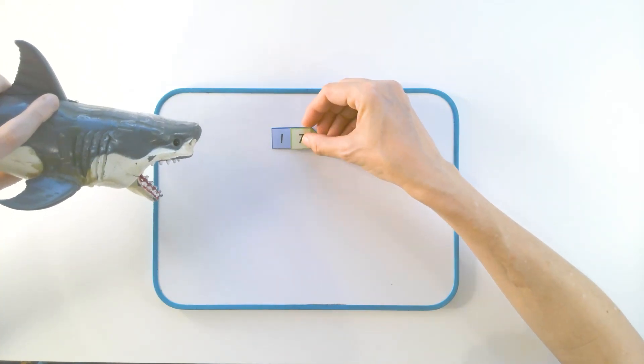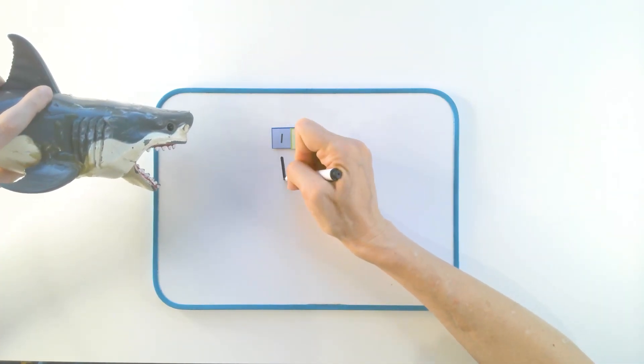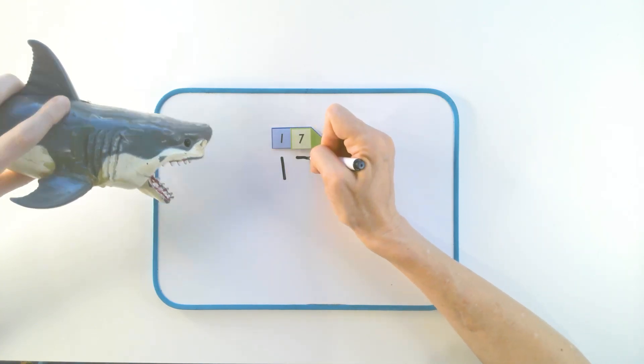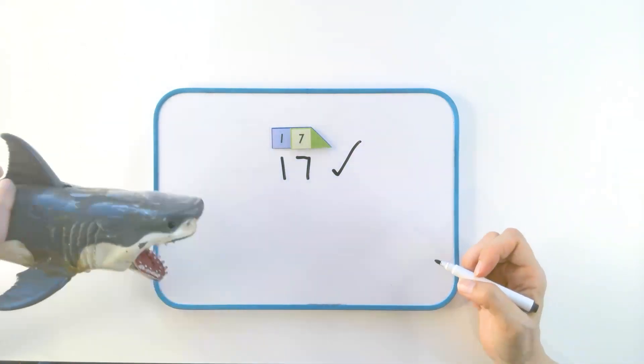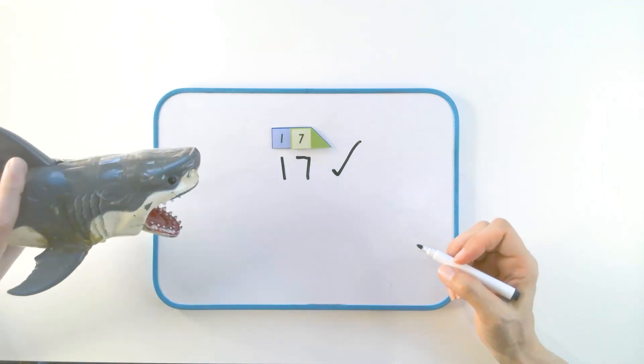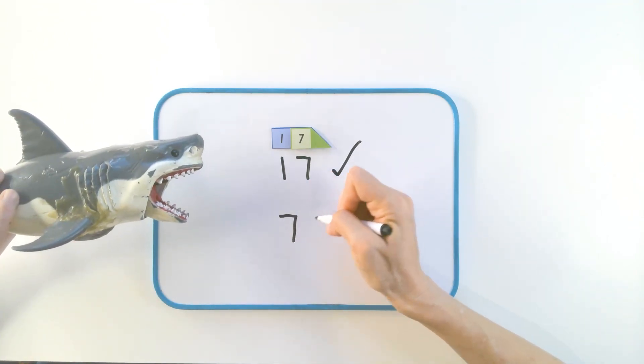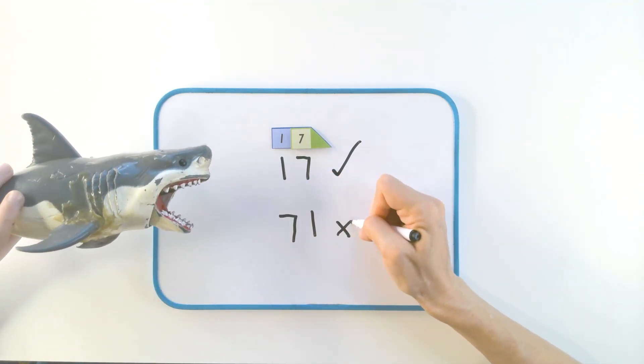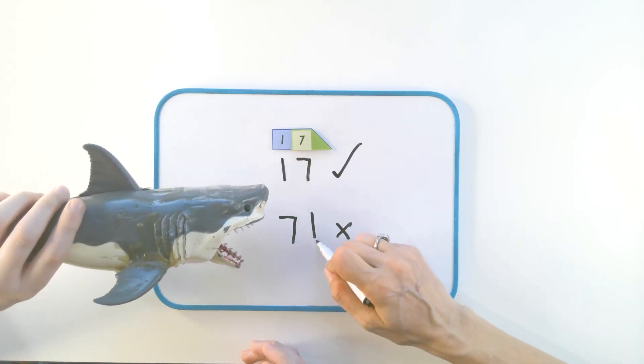So, when we write 17, we use place value. We write tens, then ones. We do not sound out like in spelling and writing. If we sound out, we would write it incorrectly. And that is not the number we're talking about. What is this one, Barty? 71. Yeah.